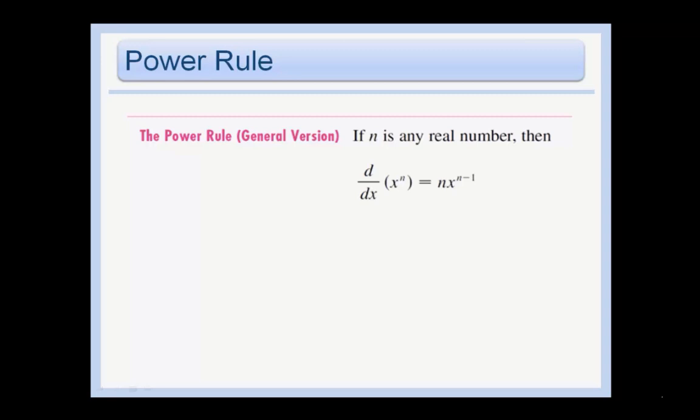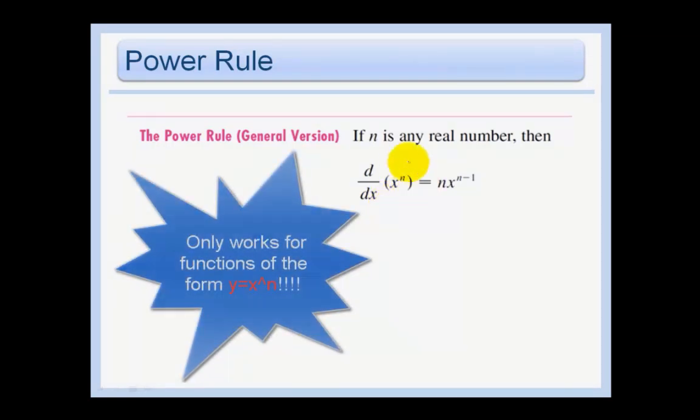The power rule saves us so much time and energy. It says if n is any real number, then d/dx of x^n, the derivative of x to the n power, equals n times x to the n minus 1. Note that this only works if we have x to the n power and take the derivative of that.